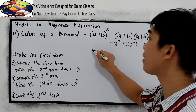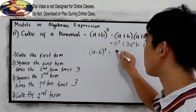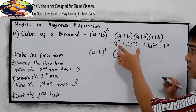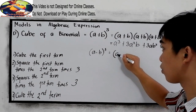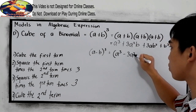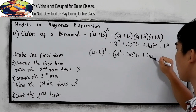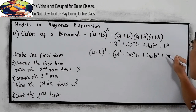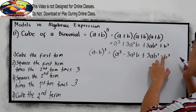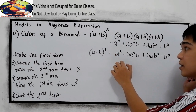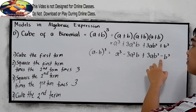Now if we have a minus b, cubed, this is just the same as the previous formula but we change the signs. That will become a³ minus 3a²b plus 3ab² minus b³. Our signs will be alternating: positive, negative, positive, negative.